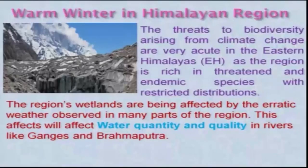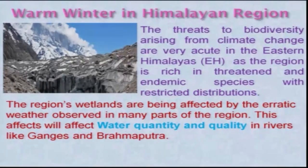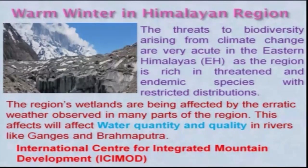We have technology, so we can manage to go to those places — otherwise very few people could reach there. Technology may be helpful, but it is also spoiling nature. The Himalayan regions and wetlands are being affected by erratic weather observed in many parts of the region. These wetlands in the Himalayan region and other places control the environment and are being spoiled. This will affect the water quantity and quality in rivers like the Ganga and Brahmaputra. People have swallowed wetlands and taken them for habitats.